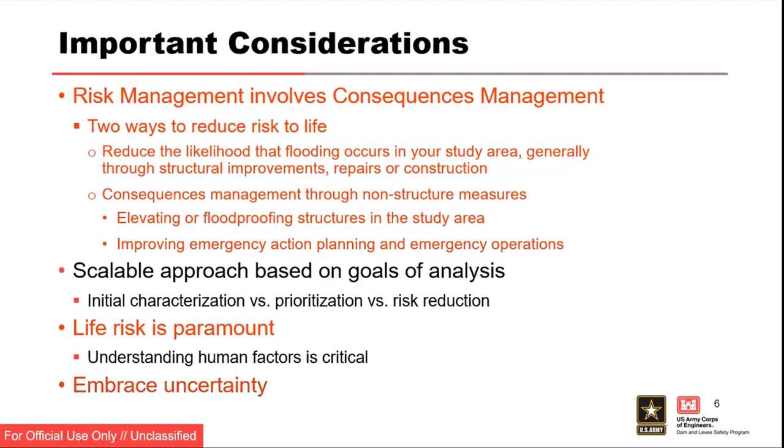Then embrace uncertainty. This is important because there is so much natural variability in redistribution of population at risk — you can only reduce uncertainty about these parameters so much. That natural variability is always going to exist. So what we do is gather information and try to reduce it as much as is reasonably practical.